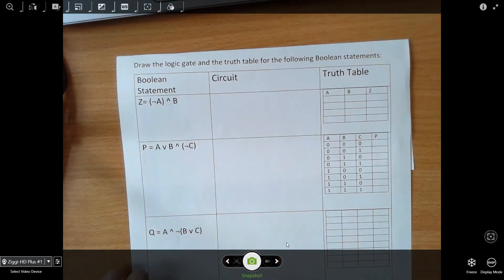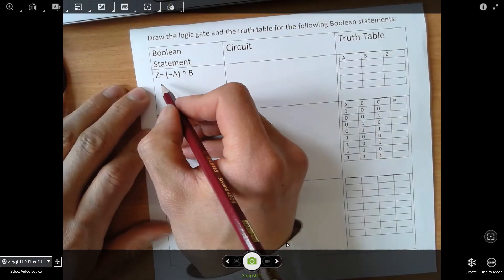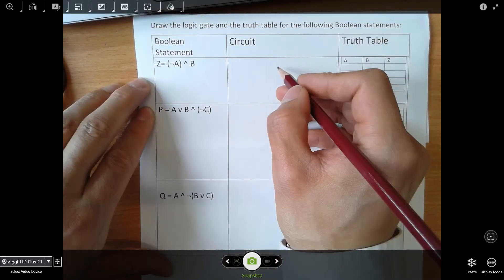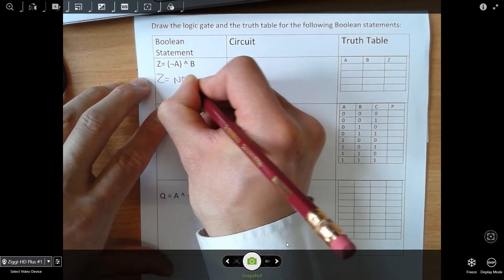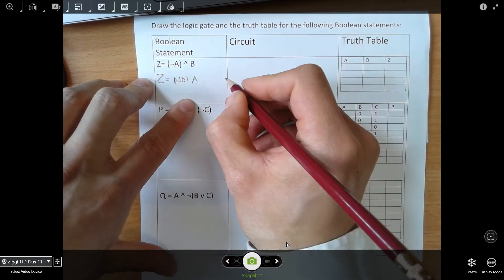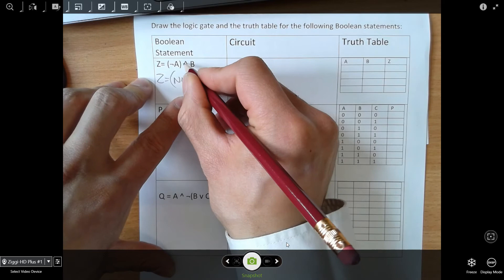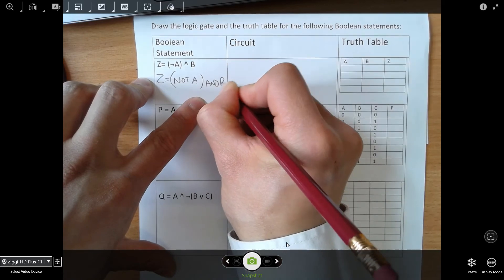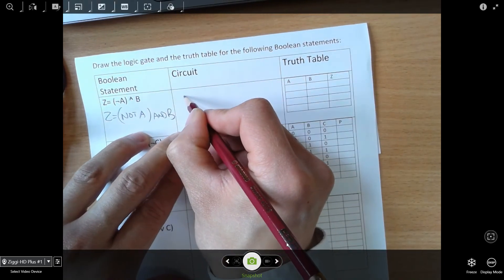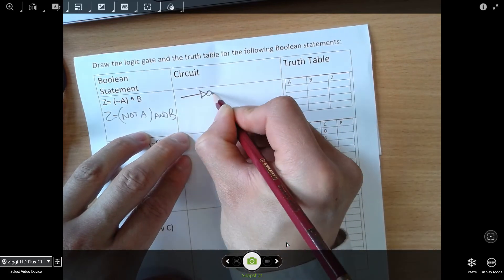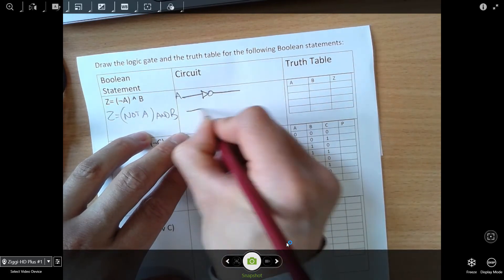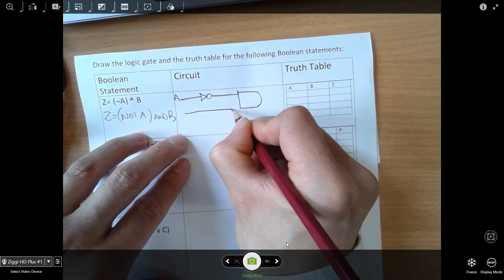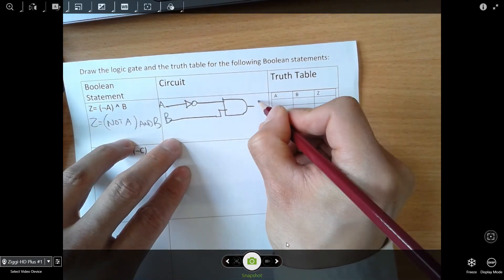Some of you will have seen this before, but the key thing is being able to read the notation from Boolean to the logic circuit. This is Z equals NOT A AND B. That hat symbol means AND - just remember, the hat looks like an A just without the bar. So NOT A and B. What's going on here is we get A and we put it through a NOT gate. We get B and we just do an AND gate there. And then the output is Z.